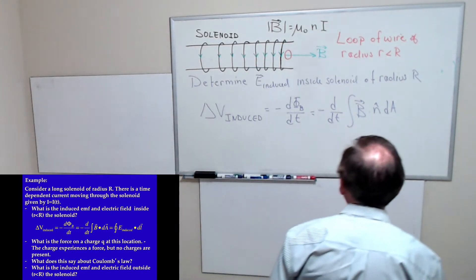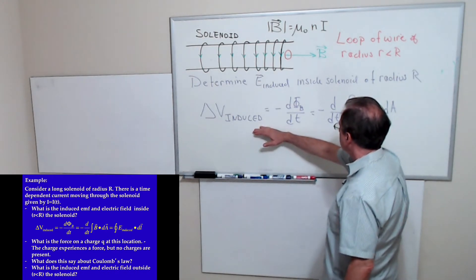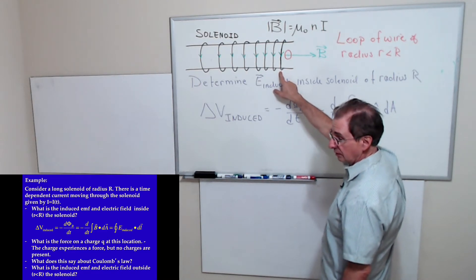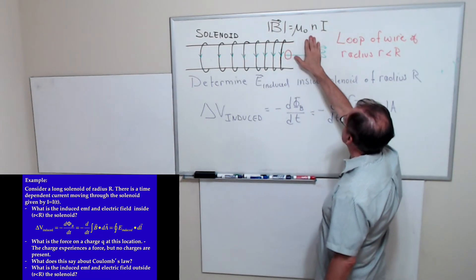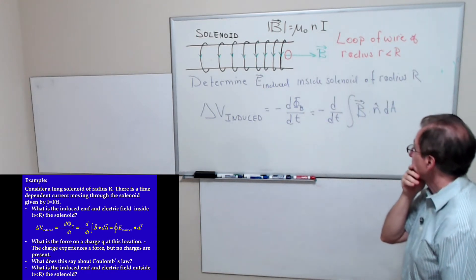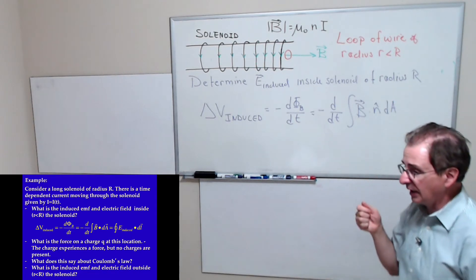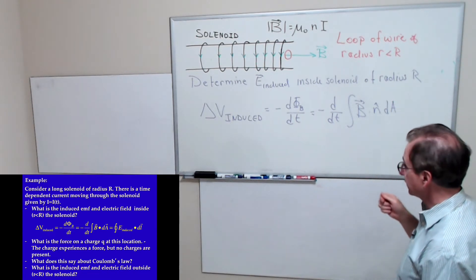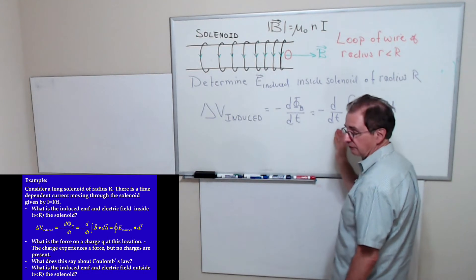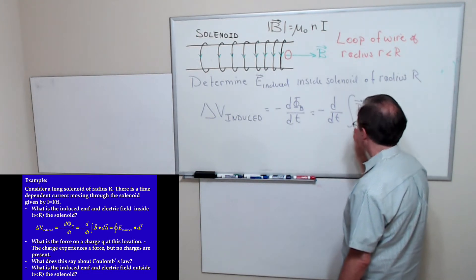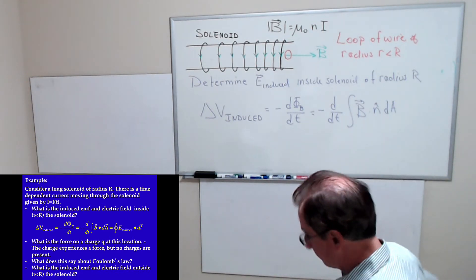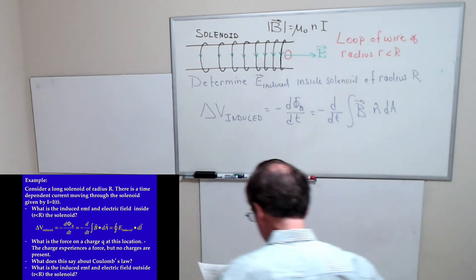We understand that we have an induced EMF if the current varies with time. Because if the current varies with time, the magnetic field varies with time. We know that the magnetic field inside a solenoid is mu-naught n I, where n is the number of turns per unit length times I. So what can we say about the characteristic of the induced electric field?